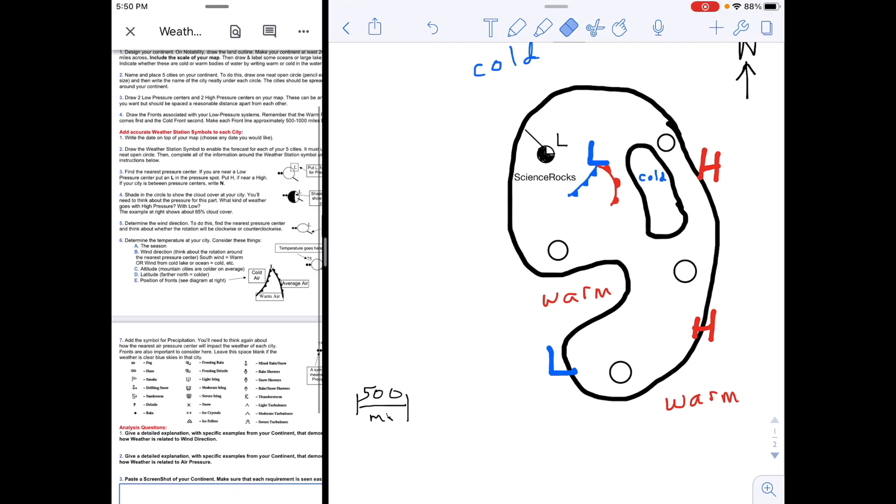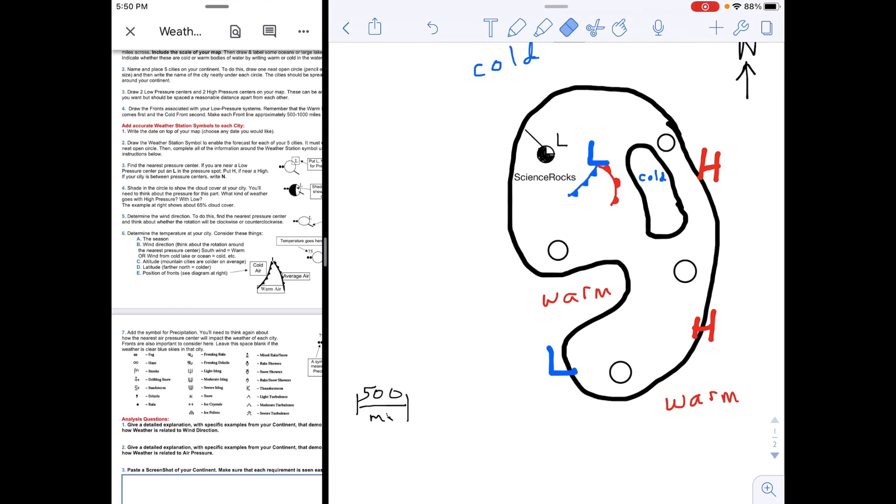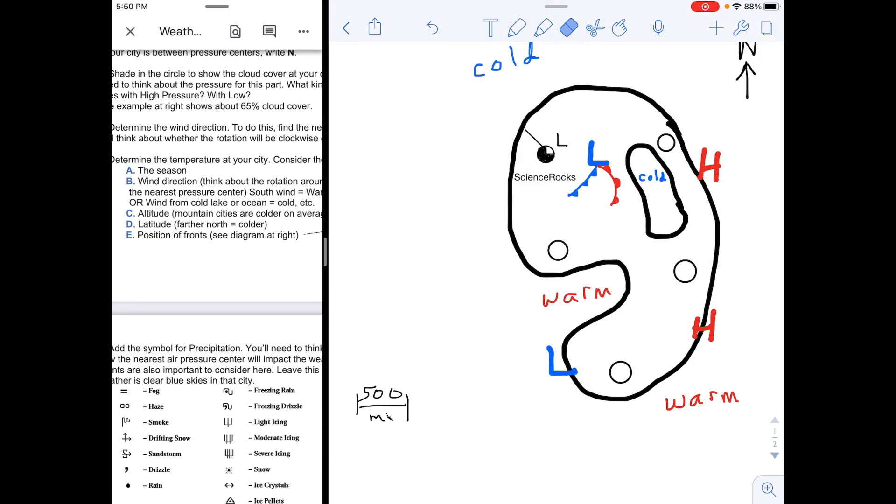Now we're ready to do step six, where we write the temperature on each weather station using the forecast on it. The temperature—you need to consider several things. You need to consider the season, because if it's winter then it's going to be colder. We're in May 22nd, so that is late spring, almost summer. The wind direction—if you remember here, if I remind you that the winds around this low are going to be going this way, and then around like that towards it, counterclockwise, that will affect the temperatures dramatically.